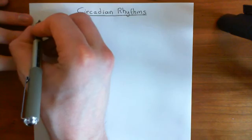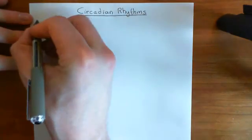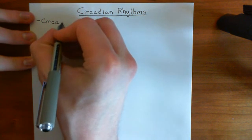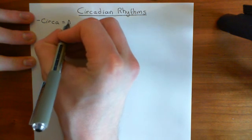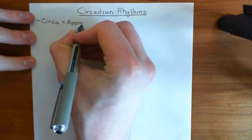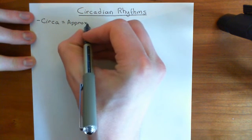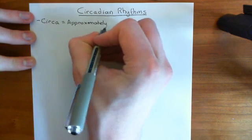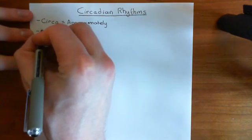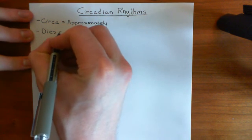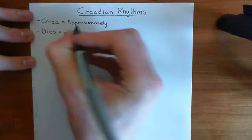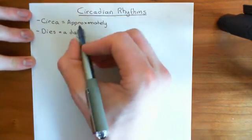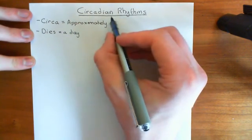Let's start off with where the word circadian came from. It came from two Latin words. The first is 'circa', which means approximately. And then the second is 'dies', which means day. So, circadian means that whatever this is, it lasts approximately a day — it's a rhythm that lasts approximately a day.